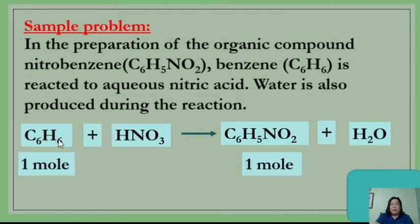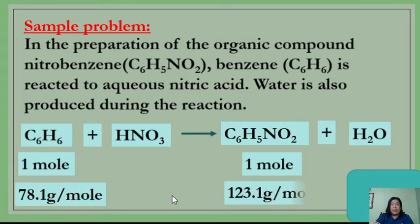Interpret the balanced equation: for every 1 mole of benzene reacted with 1 mole of aqueous nitric acid, it will produce 1 mole of nitrobenzene and 1 mole of water. In any mass-to-mass stoichiometric calculation, you need to compute the molar masses of the two substances. For benzene, that is 78.1 g/mol; for nitrobenzene, it is 123.1 g/mol.